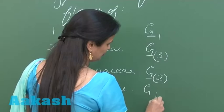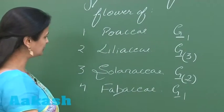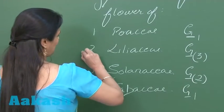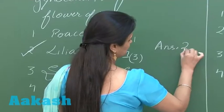Fabaceae, it is monocarpellary and superior. So it means the tricarpellary condition is seen in the case of Liliaceae family. So the right answer for this question is option number 2.